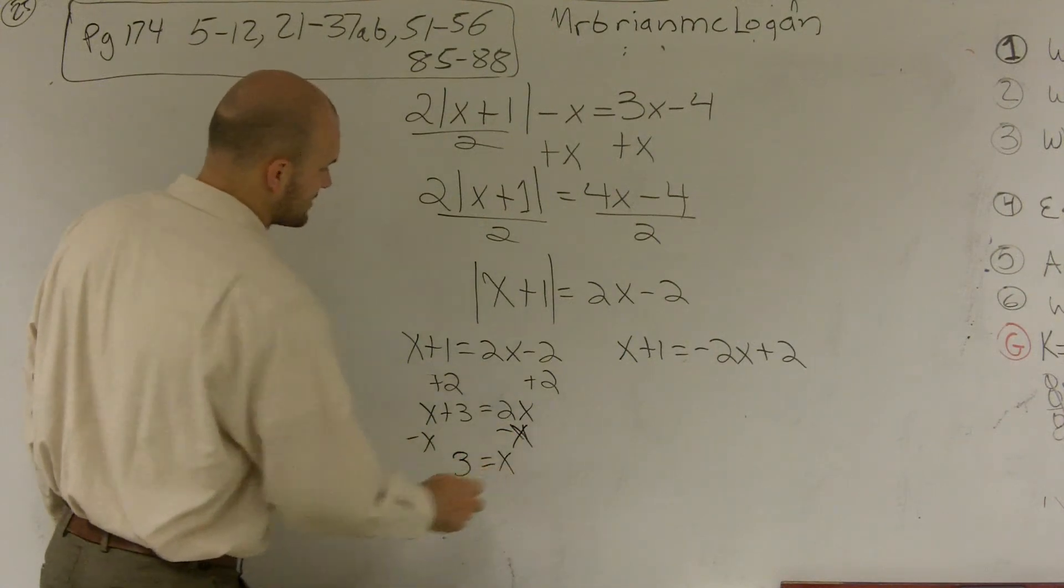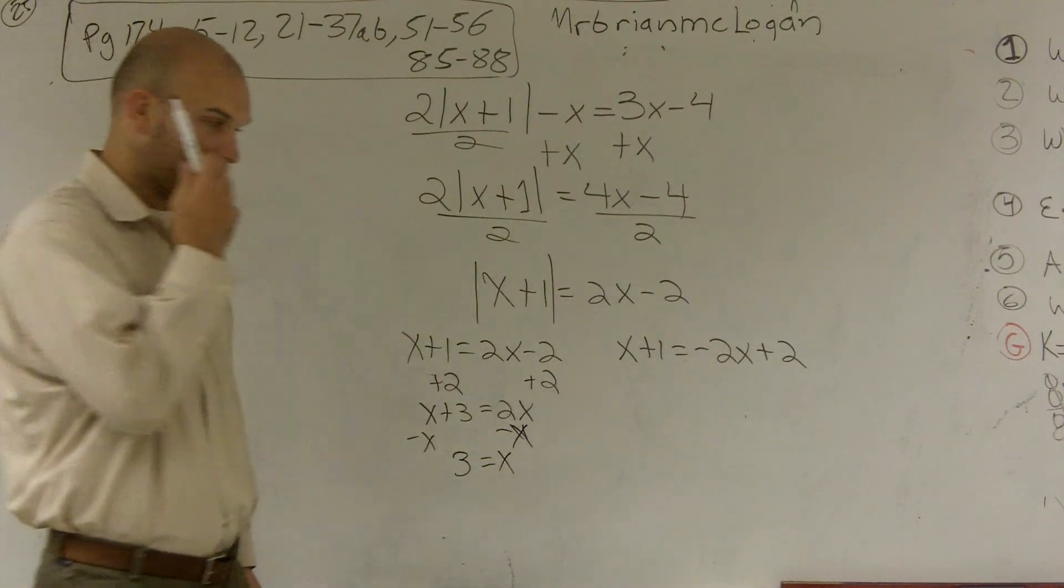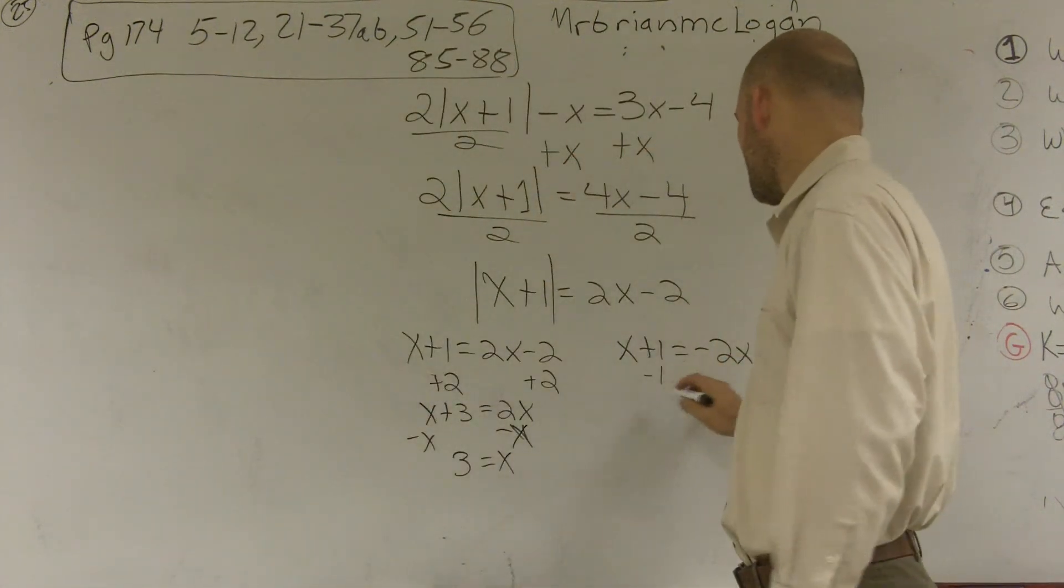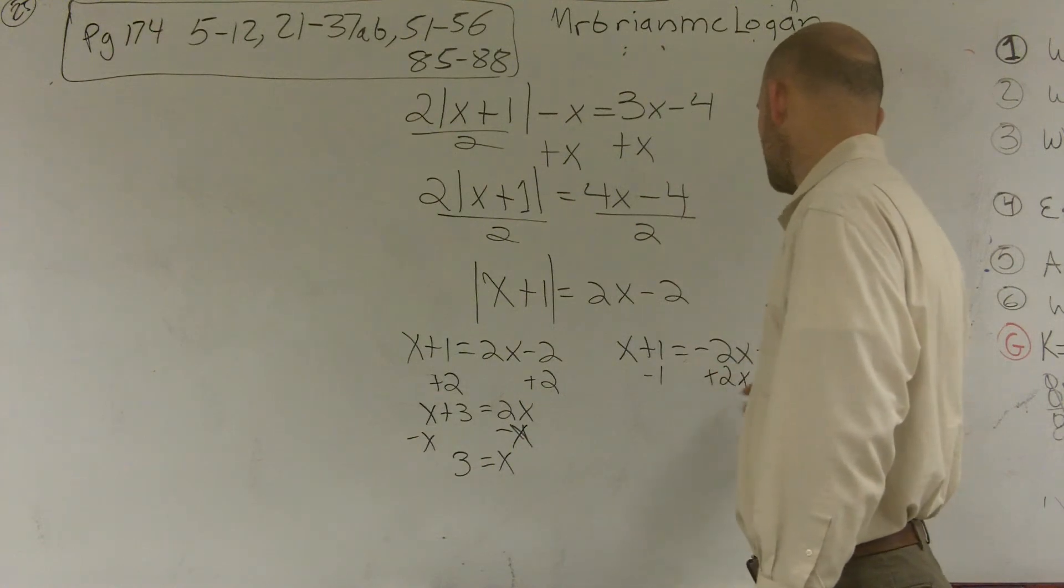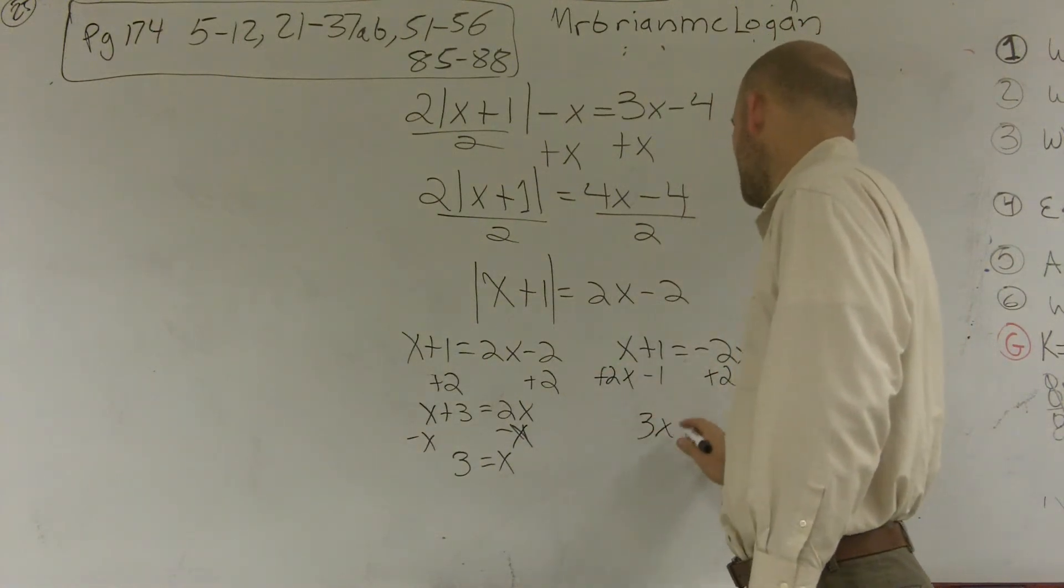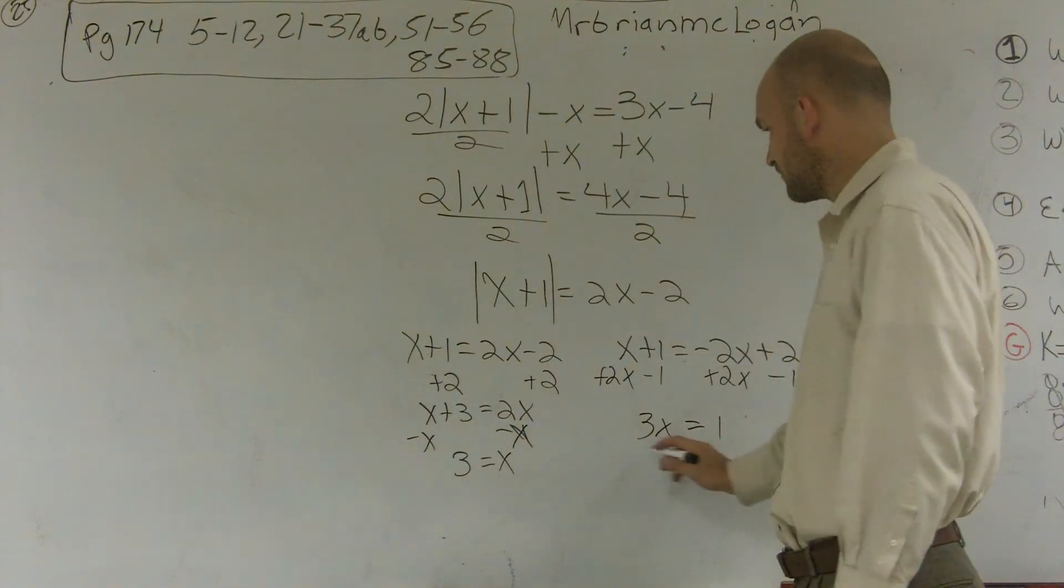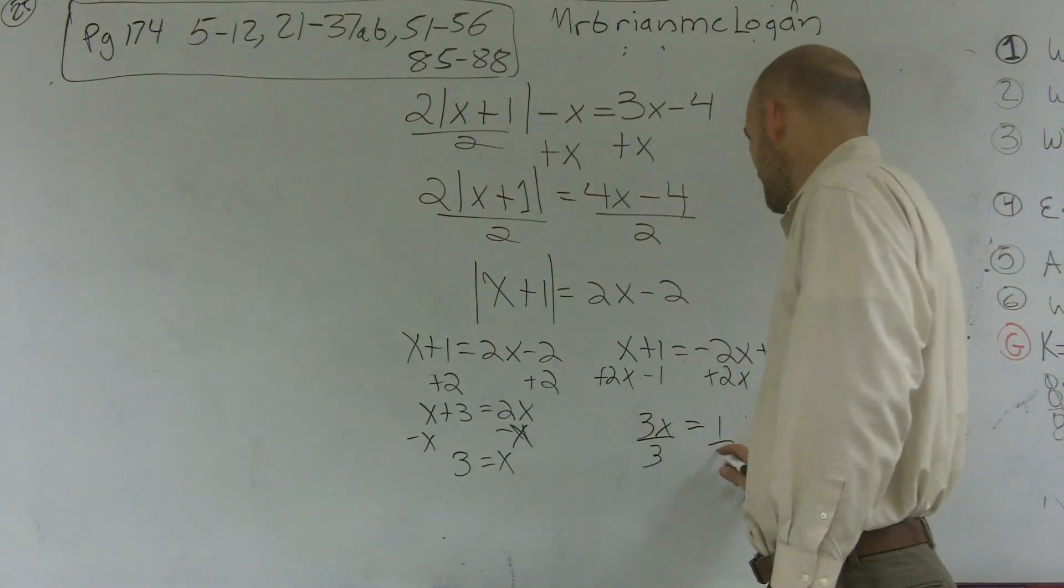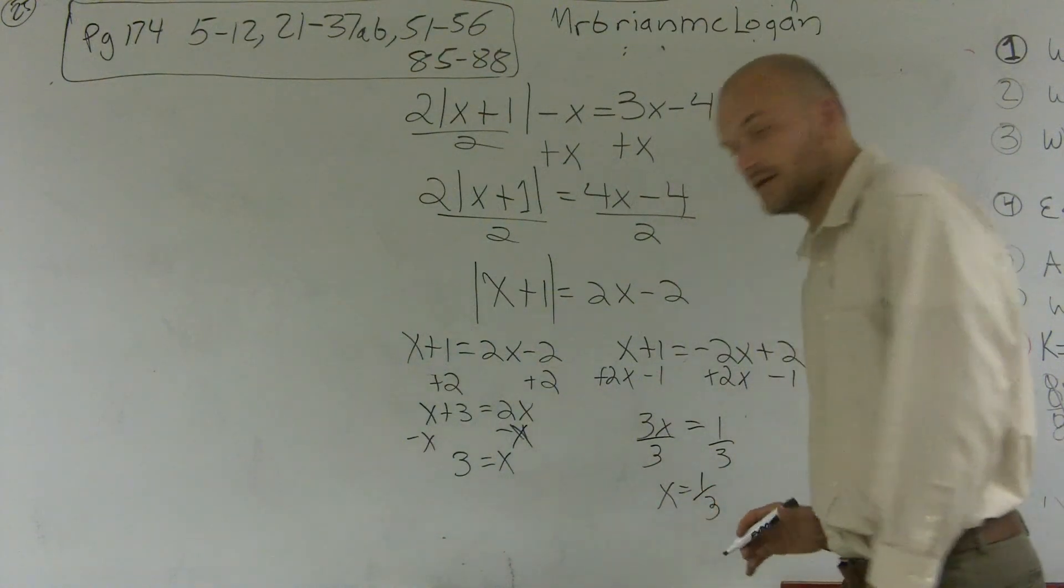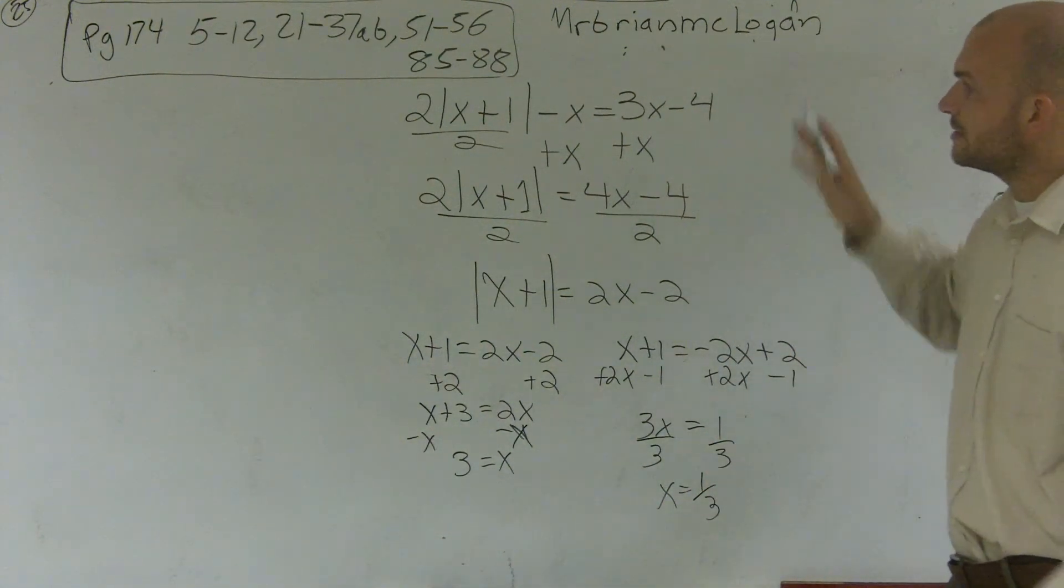And then over here for the negative value, let's see. I'll subtract the 1, add 2x. So I'll be left with 3x equals positive 1. Divide by 3, x equals 1 third. So that's how you evaluate for two solutions.